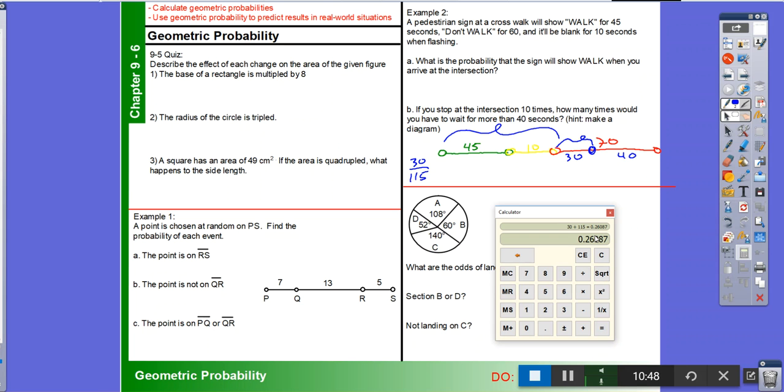Because it's 26 percent of the time, that's rounding up to three out of 10. Because this times 10 is 2.6, round to three.